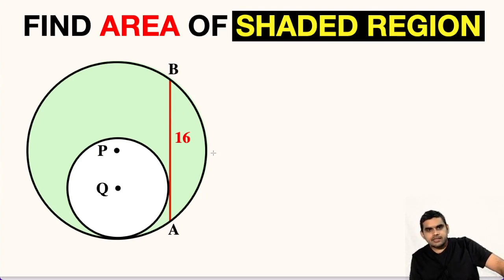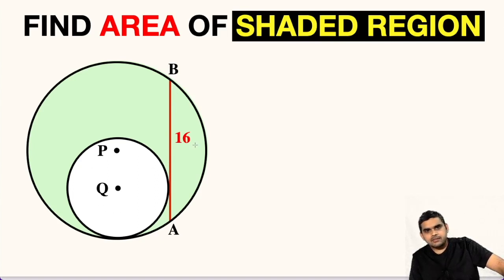The center of the bigger circle is at point P, while this smaller circle has a center at point Q. BA is a tangent to this smaller circle and its measure is 16 units. We have to find the area of this shaded region.